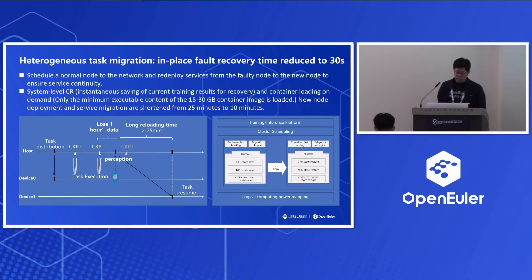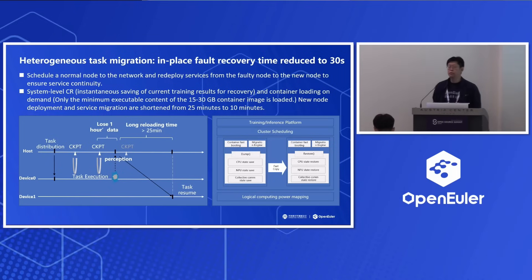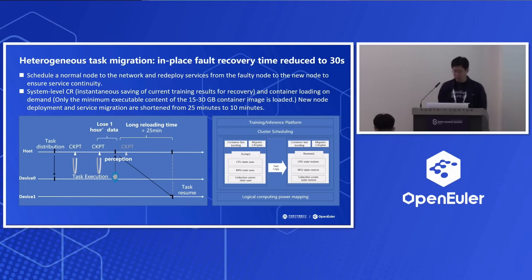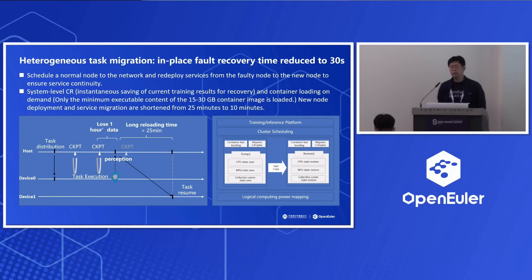This all requires heterogeneous task migration. Before, we had technologies like CRIU to migrate tasks on the CPU side, but it can't migrate tasks with GPU workloads or NPU workloads. So we are doing work to enable migration for those kinds of tasks that involve GPUs, NPUs, or other accelerators, so that we can achieve task migration to another node or in-place recovery.